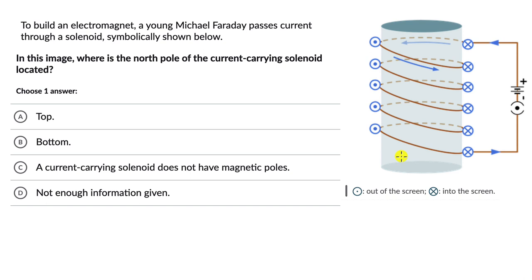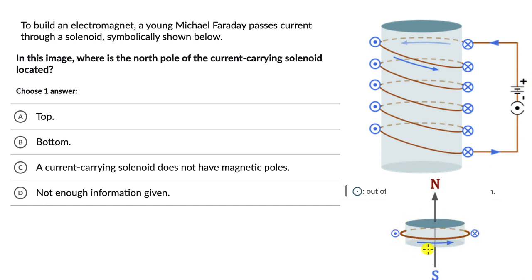Now try to recall how we find the effective magnetic poles of a current-carrying loop. We use the right-hand rule — we curl our fingers in the direction of the current, and when we do that, our thumb will point in the direction of the north pole. So in this case, we will see that the north pole is really in the top direction.